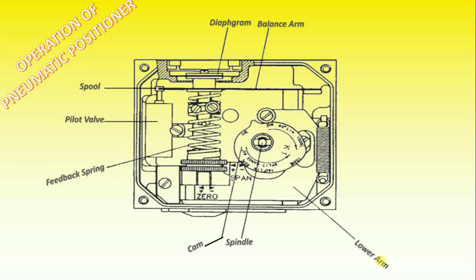Do you know how to adjust zero and span for pneumatic positioners? Always return to minimum input signal first.